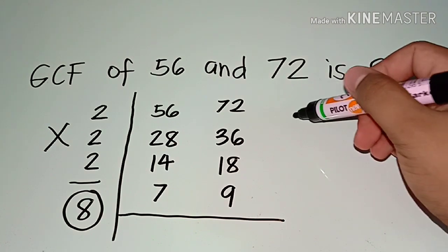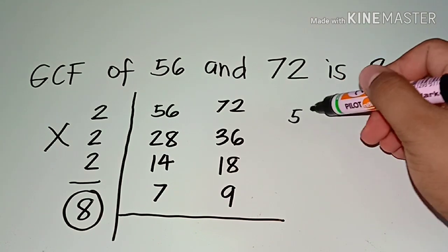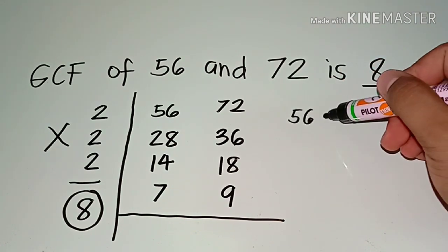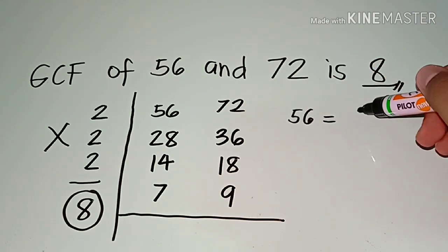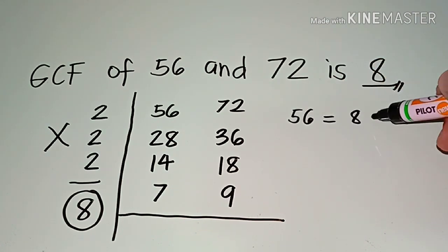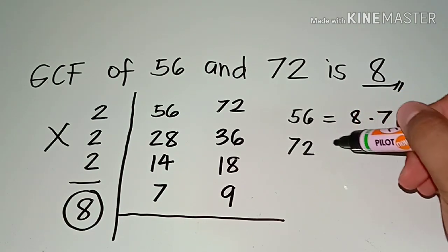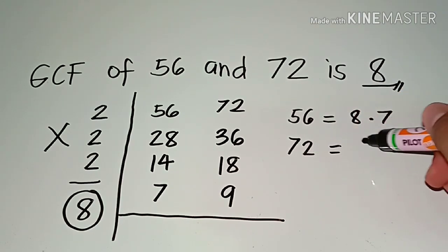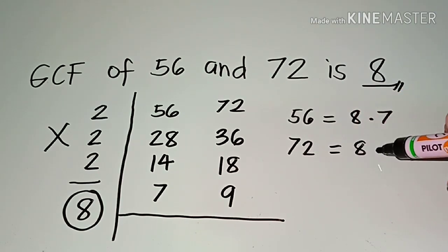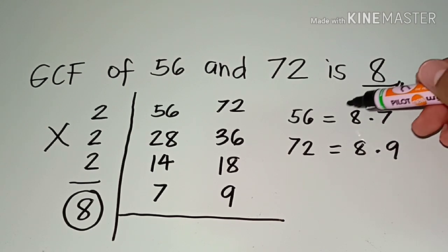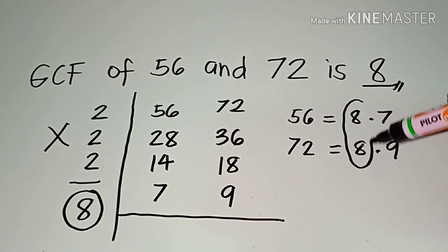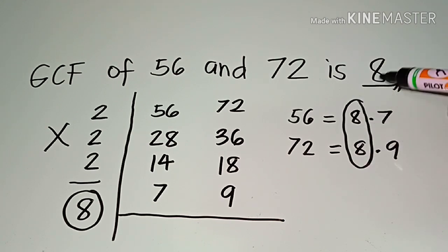To check: for 56, the factors are 8 times 7. For 72, the factors are 8 times 9. So their common factor is 8.